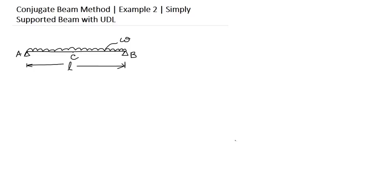In this example, we will determine the slope and deflection of a simply supported beam AB of length L which is subjected to a UDL loading of W unit per meter. So we have to determine theta A, theta B, which is obviously equal because it is a symmetric structure, and also have to determine the maximum deflection at the midpoint C.